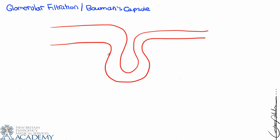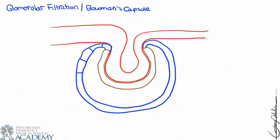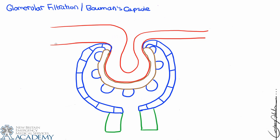In this video we're going to focus on glomerular filtration and Bowman's capsule. We're going to draw a blow up of all the structures that we've drawn before so we can take a closer look at them. We know that entering into Bowman's capsule we have the afferent arteriole.